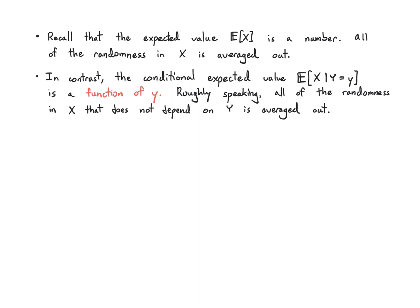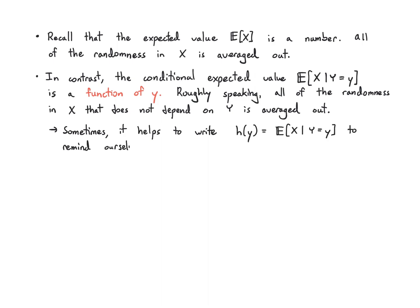Sometimes it helps to write this conditional expectation as a particular function h of y, to remind ourselves that what we're getting is actually going to be a function of this little y and not necessarily just a number. The notation E of X given Y equals little y can confuse us — sometimes it helps to just write h of y.